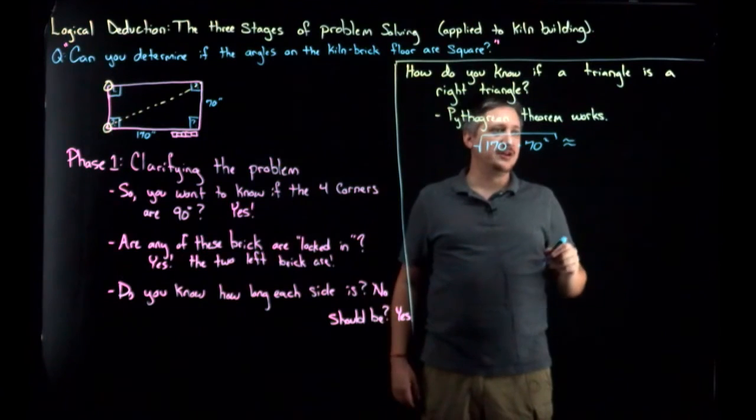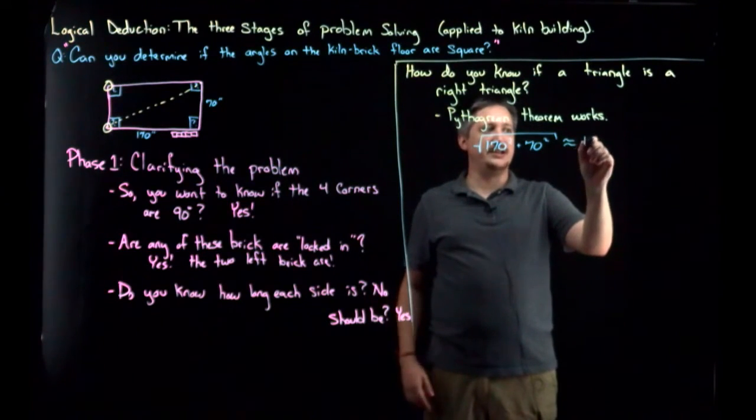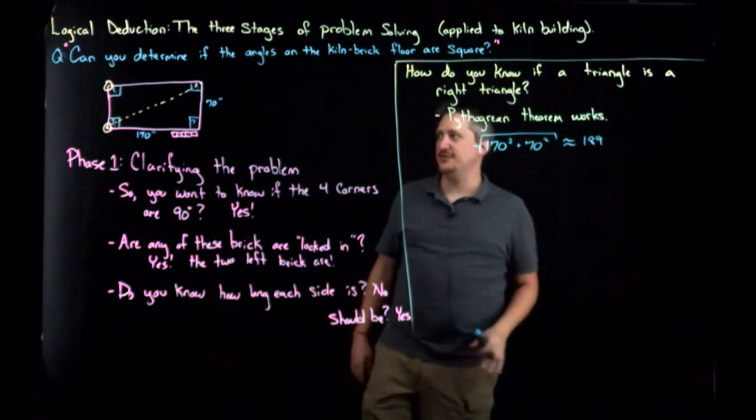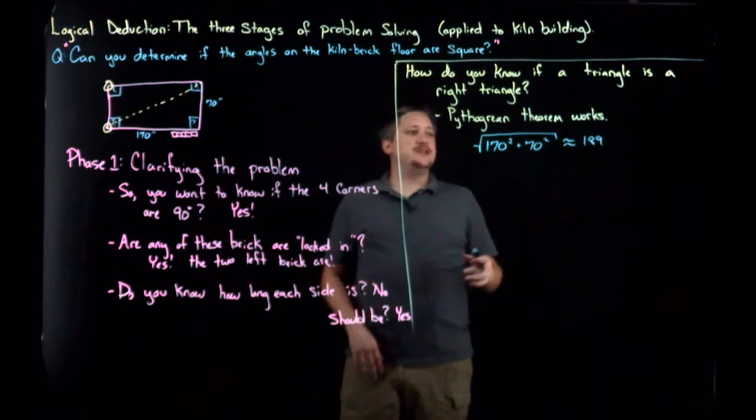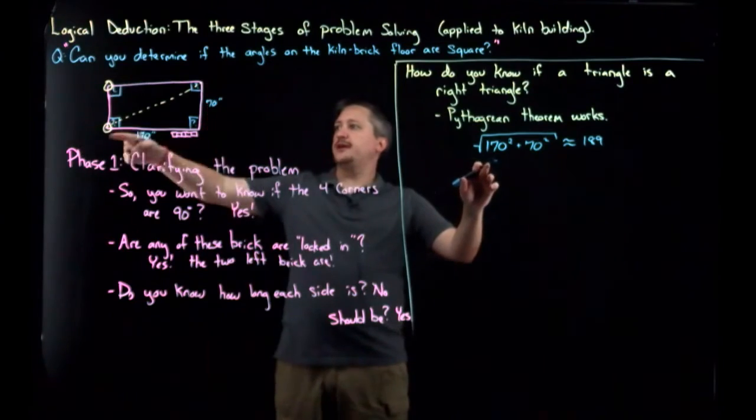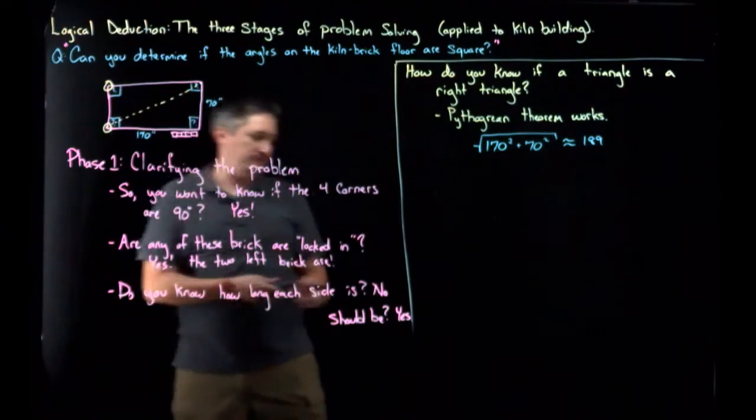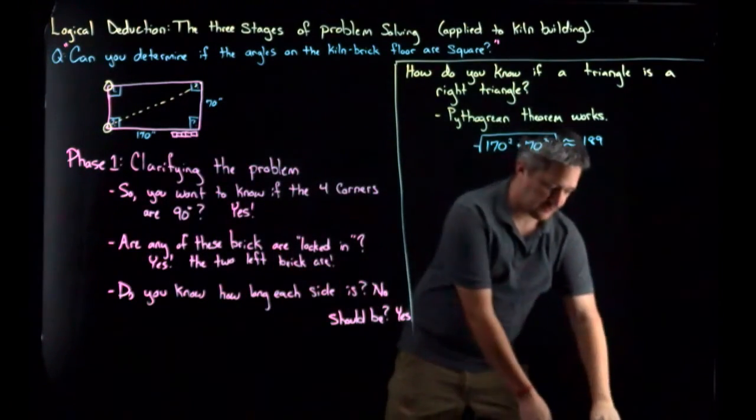So, if Pythagorean theorem works, what does that mean? Well, that means I have leg and leg, so that would tell me that 170 inches squared plus 70 inches squared square rooted. This is some number, I don't know what number it is, so plug it into a calculator. I'm just going to make up a value. This is, say, 189 or something. Again, I'm totally making that up.